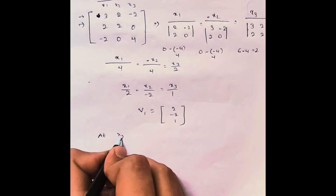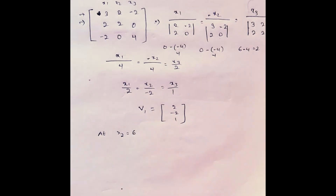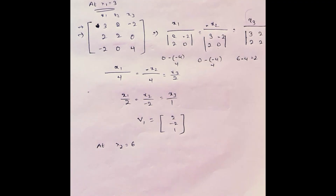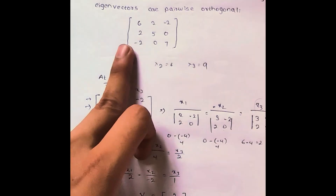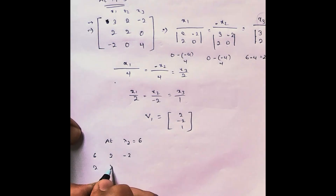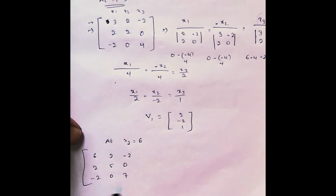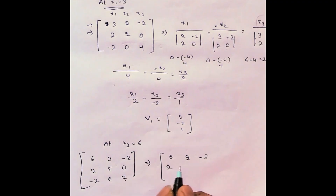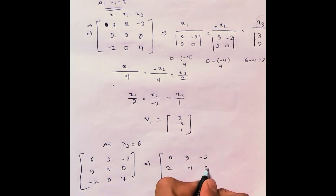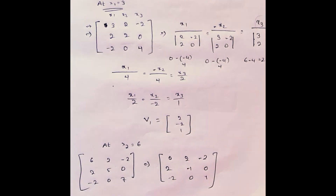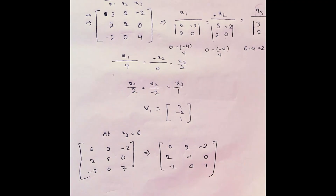Similarly, we do this for the next two vectors. At lambda 2 equal to 6, we subtract 6 from the diagonal elements. The matrix is 6, 2, minus 2, 2, 5, 0, minus 2, 0, 7. After subtracting: 6 minus 6 is 0, 5 minus 6 is minus 1, 7 minus 6 is 1, giving the resulting matrix for lambda 2 equal to 6.